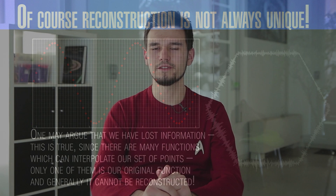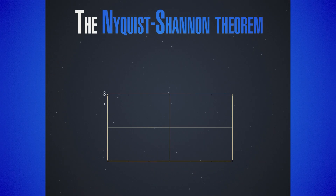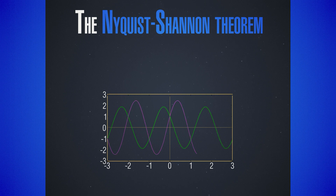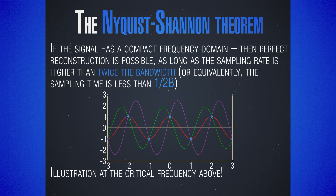What does the Nyquist-Shannon theorem tell us? Suppose we have a signal with a compact frequency domain — our signal has no frequency larger than some maximum frequency b, and the full spectrum spans from -b to +b. It turns out we can completely recover our signal as long as our sampling rate is larger than twice this bandwidth — so larger than twice b, which is the highest frequency.